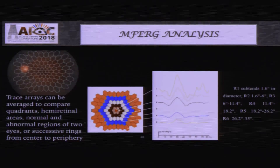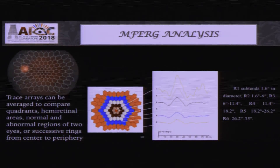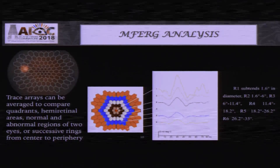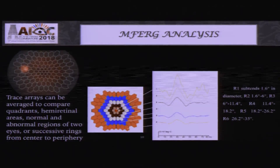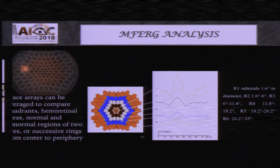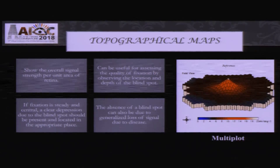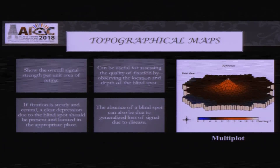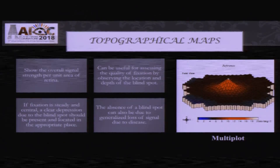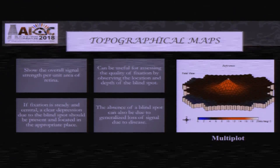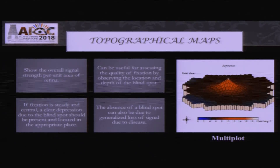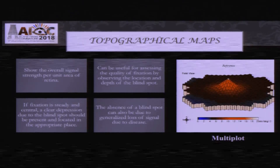MFERG can be analyzed — this is done by the machine itself. It gives responses in a few rings around the macula so you know whether the fovea, perifovea, or parafovea is involved. It can give you a topographical map as well, which is very good to look at, but you will miss the details. Even if the waveforms are very noisy, you may still get a map, but the whole MFERG is useless because the waveforms are noisy. So it is important to see the topographical map along with the trace array.